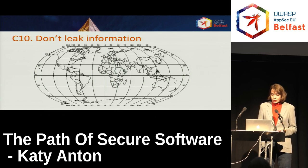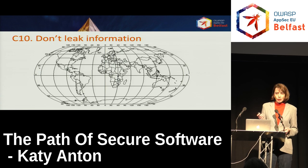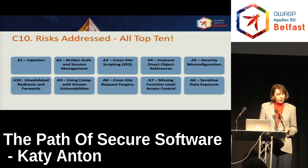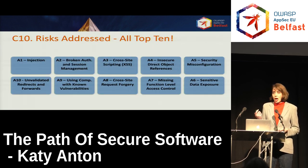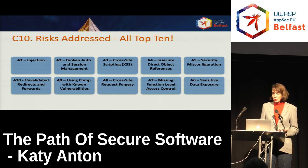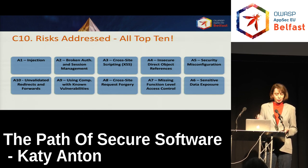So having well-designed error messages and exception handling that doesn't disclose information about your application can prevent all the OWASP top ten risks.